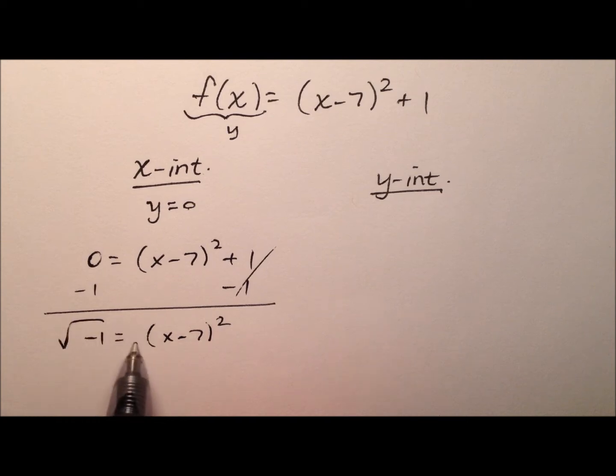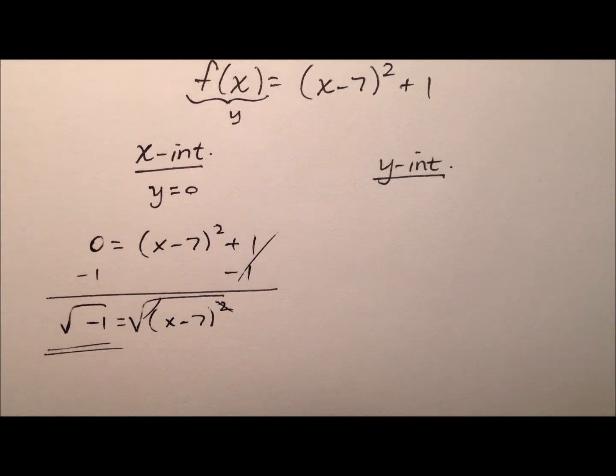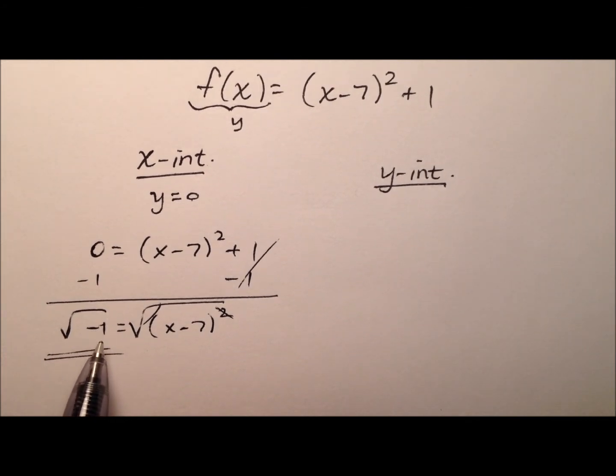Let's go ahead and take the square root of both sides to kind of get rid of this square, and it looks like, uh-oh, we've got a little imaginary number here, the square root of a negative number, which means there are actually no x-intercepts.